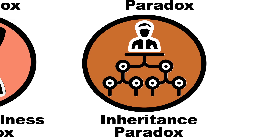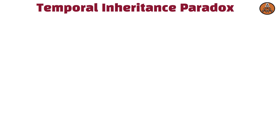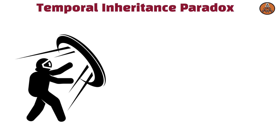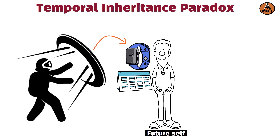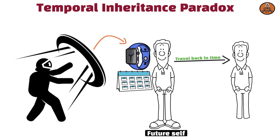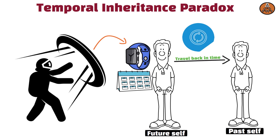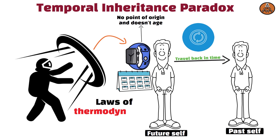The temporal inheritance paradox occurs when a time traveler inherits something from themselves. For example, a traveler might receive a watch from their future self, wear it for years, and then travel back in time to give it to their past self. This creates a loop where the watch has no point of origin and doesn't age, defying the laws of thermodynamics.